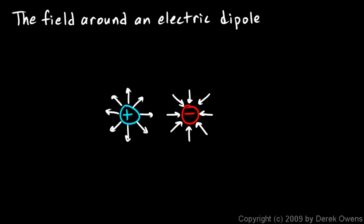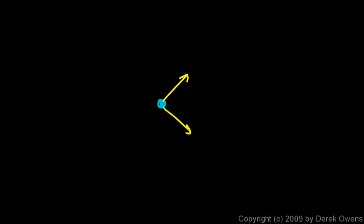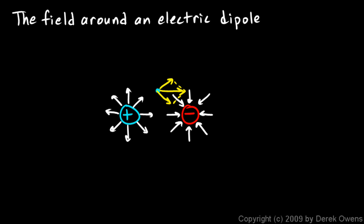What does the field look like in other regions, not nearby? Let's imagine putting a little positive test charge right there. The positive charge is pushing away in this direction, so let's draw a vector arrow representing that force. The negative charge is pulling in toward it, so let's draw an arrow representing the force pulling toward the negative charge. Those two vectors together add up to a force to the right, using the parallelogram method for vector addition. So the direction of the electric field right there is to the right.